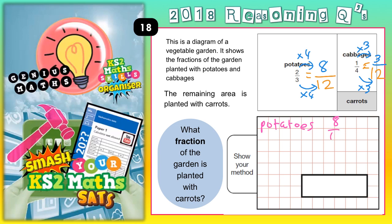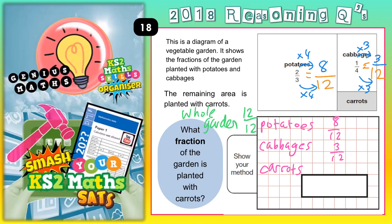The potatoes is eight twelfths and cabbages is three twelfths. Carrots is the rest of it — the remaining area to make it up to the whole garden. The whole garden would be twelve twelfths, so that's worth remembering. Eight twelfths and three twelfths is eleven twelfths, so we just need one more twelfth for carrots, and that will get us up to twelve twelfths to make the whole garden.